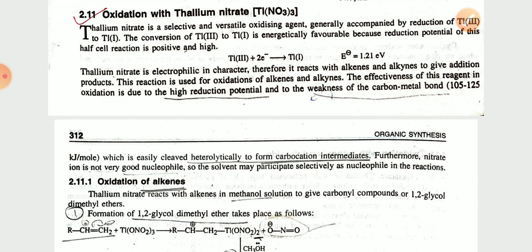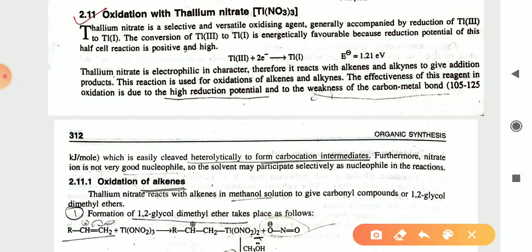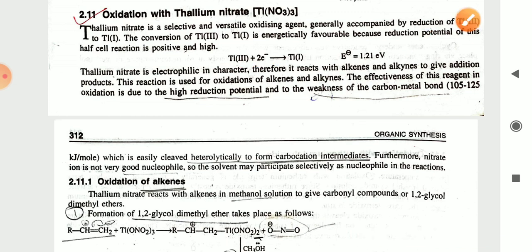This conversion is energetically favorable because the reduction potential of this half-cell reaction is positive under high conditions. Thallium(III) is converted into thallium(I) with release of energy. Thallium nitrate is electrophilic in character, therefore it reacts with alkenes and alkynes to give addition products.